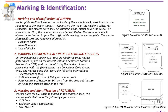The marker plate shall carry the following information: exchange name, manhole or handhole number, and year of placing. Number two: marking and identification of unterminated ducts — unterminated ducts or pokeouts shall be identified using a marking plate fixed on the nearest wall or a dedicated location service wire or LSW post. In case of fixing the marker plate on a permanent wall, the fixing height shall be 500 mm above ground level. The marker plate shall carry: type and number of ducts, station number. In case of fixing on a marking post, both vertical and horizontal distance from the pokeout shall be shown.